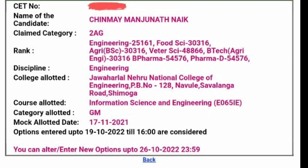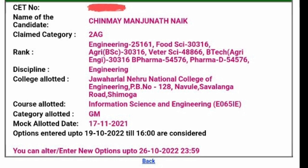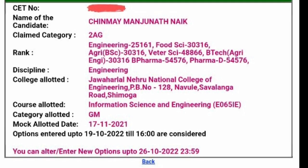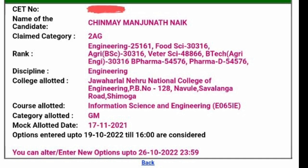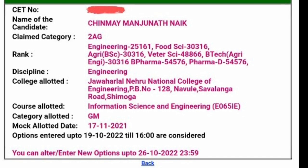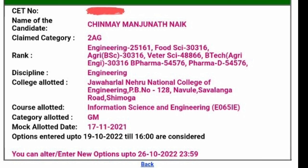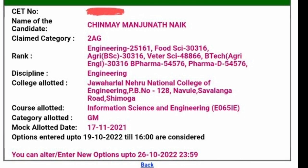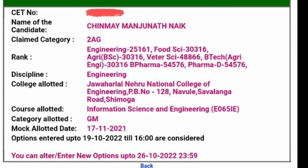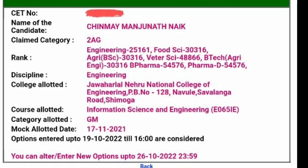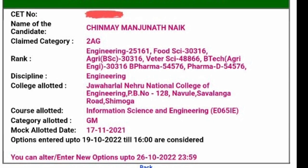For all of the categories, the seat allotment includes both reservation and general merit. All of the categories are considered under general merit. The categories sheet includes three seats in general and three in rural areas. Here you have one category.